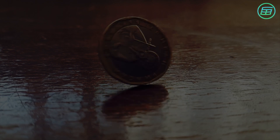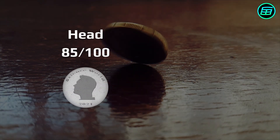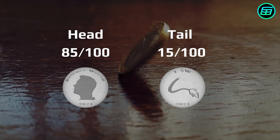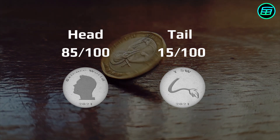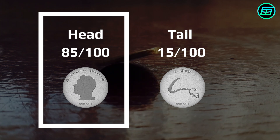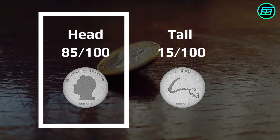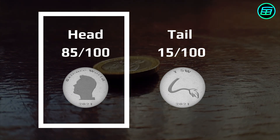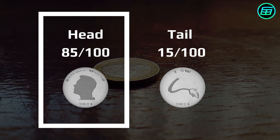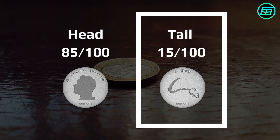Suppose we toss a coin 100 times and get 85 heads and 15 tails. What's your guess for the next toss? Some people may say heads, because 85 out of the last 100 tosses have come up heads, so it seems that heads are on a roll. Other people though may guess tails, in the belief that there must be more tails coming up to redress the balance.